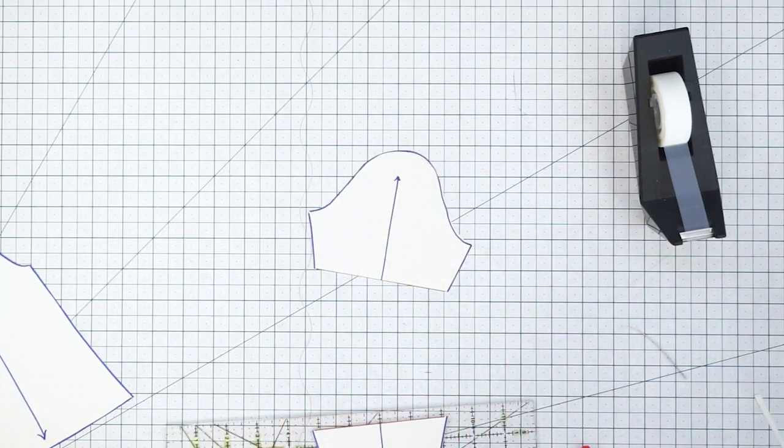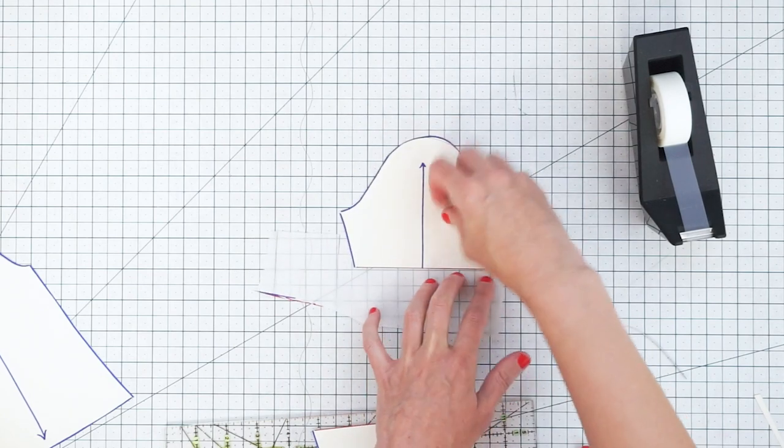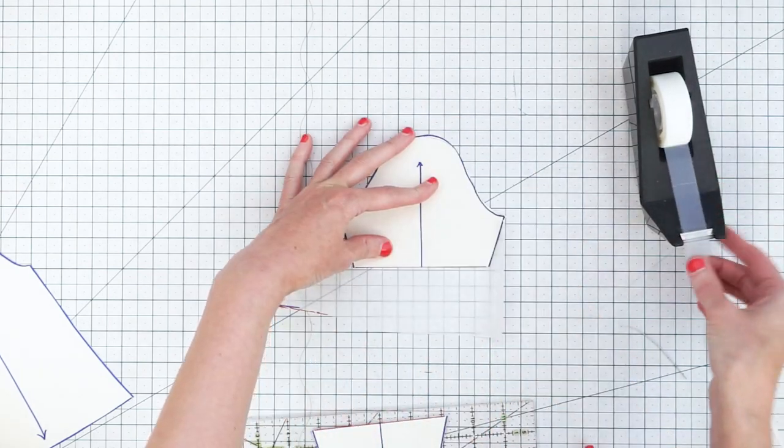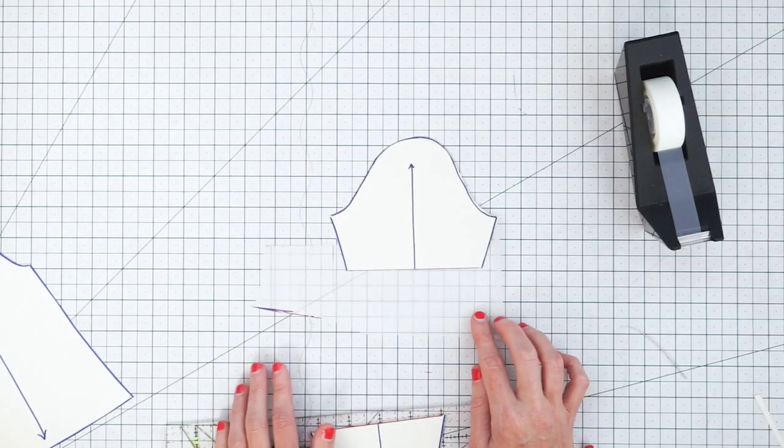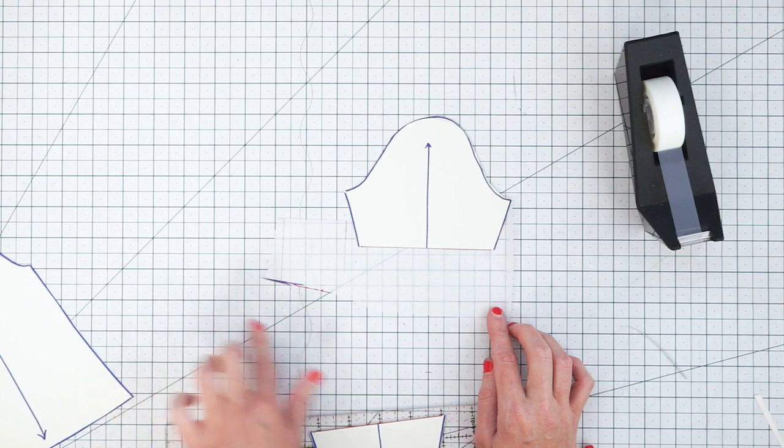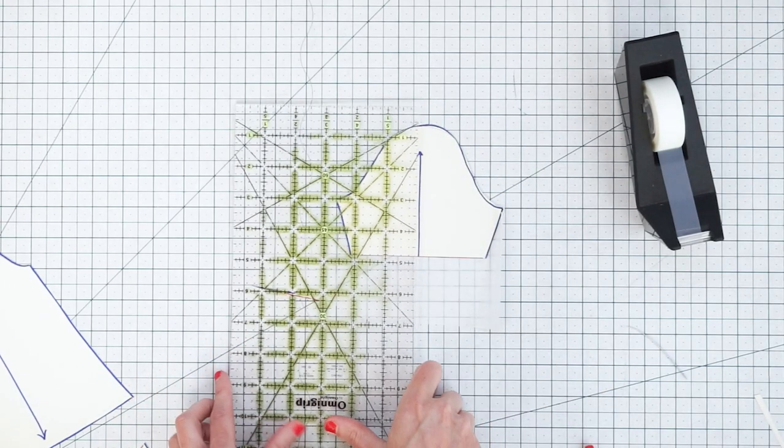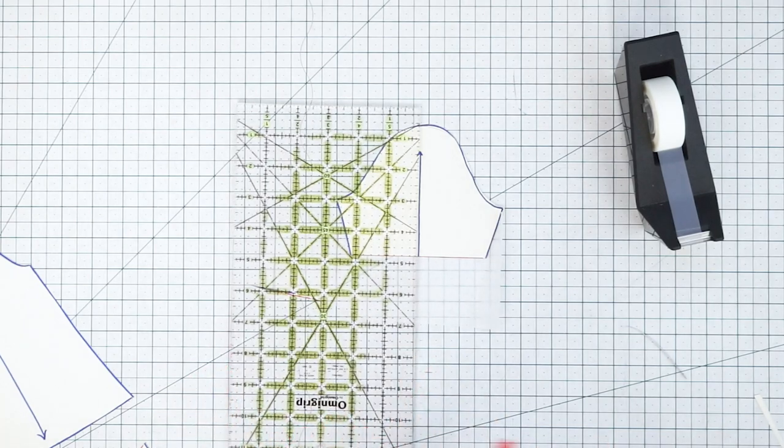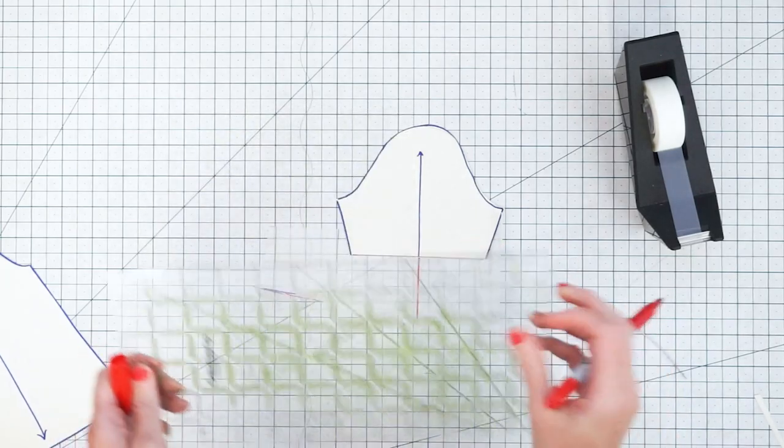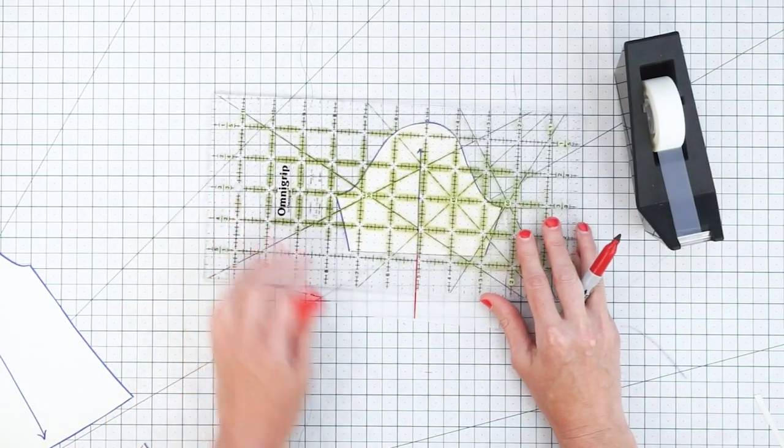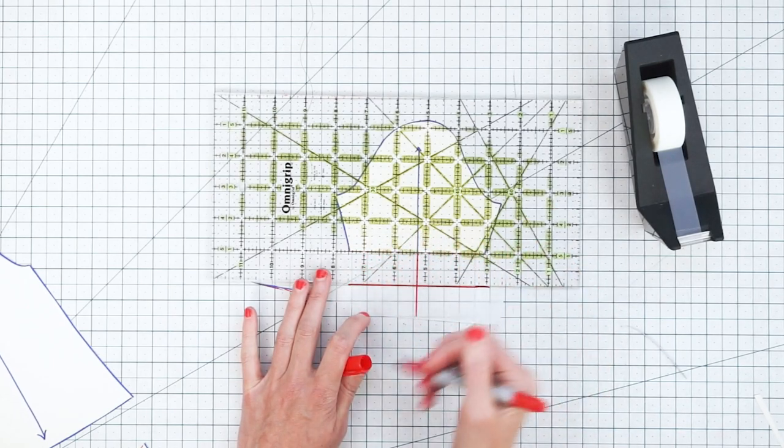Okay then you need to grab a scrap of paper and we're going to put it underneath our pattern piece. If your scrap of paper is translucent you can use a grid on your cutting mat like this, or if it's not you'll want to draw in the grain line on your scrap paper. So you just extend this grain line down and then you want to draw in a guideline for how far you're going to lengthen it. And again you just want to keep that parallel to our cut line.